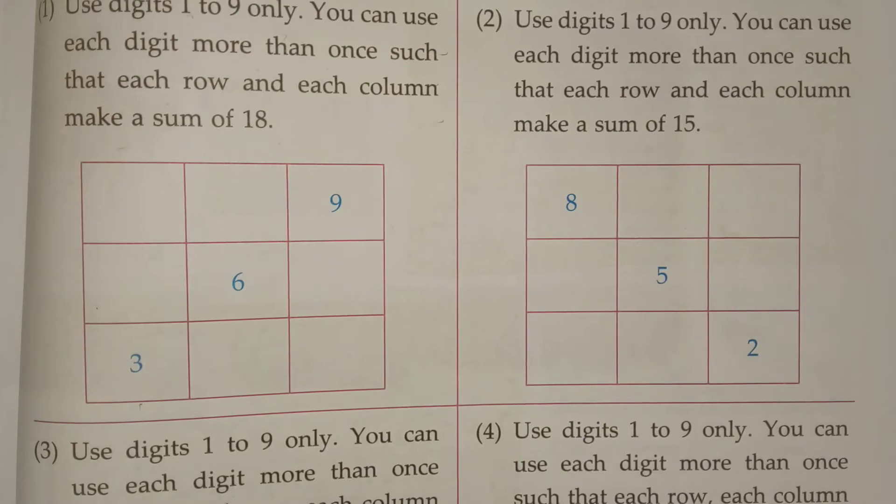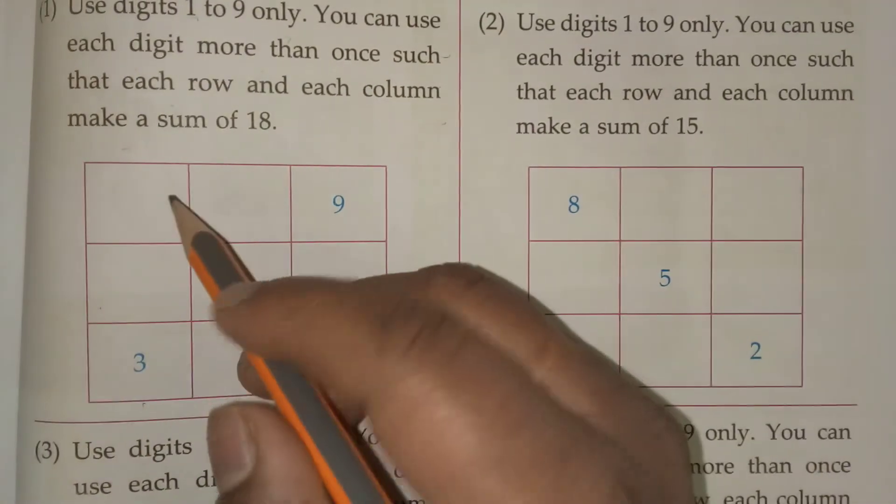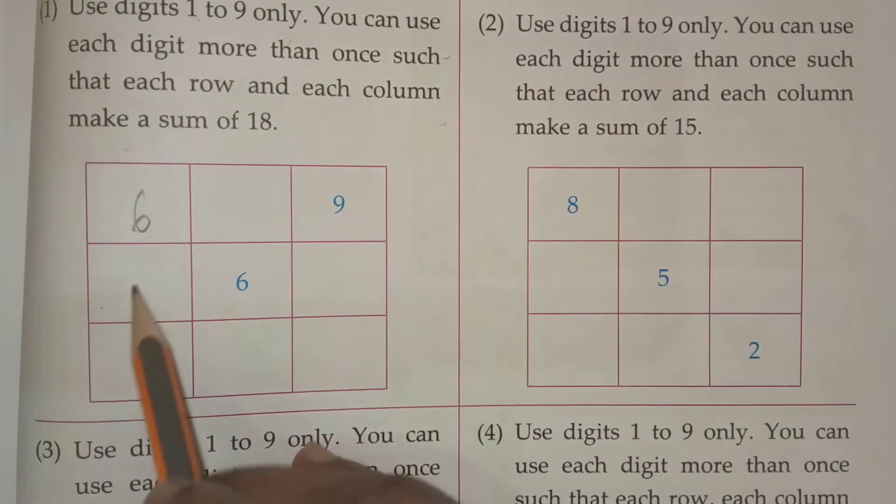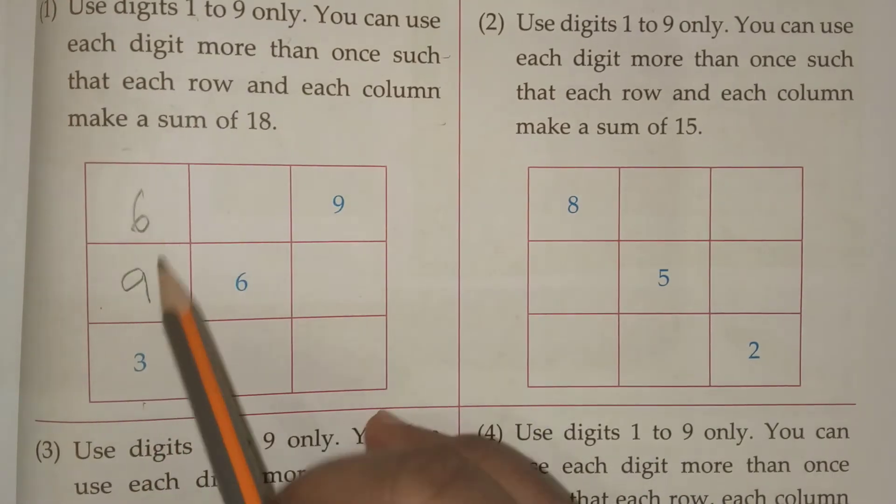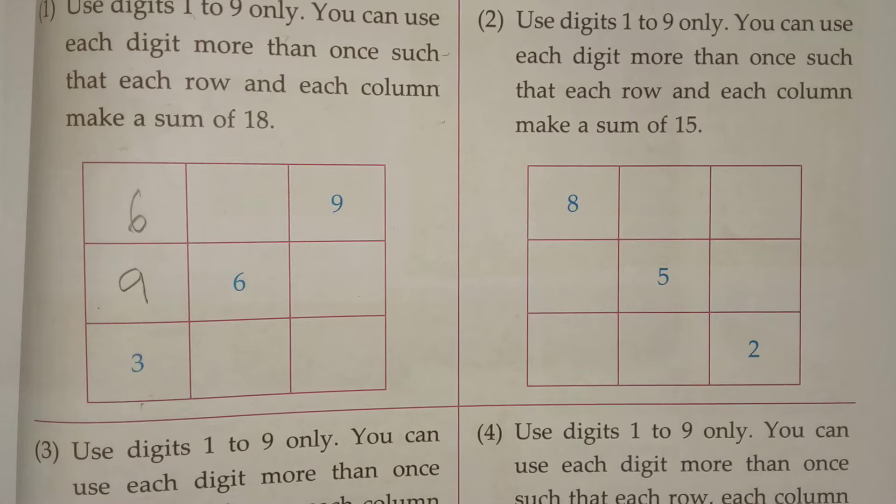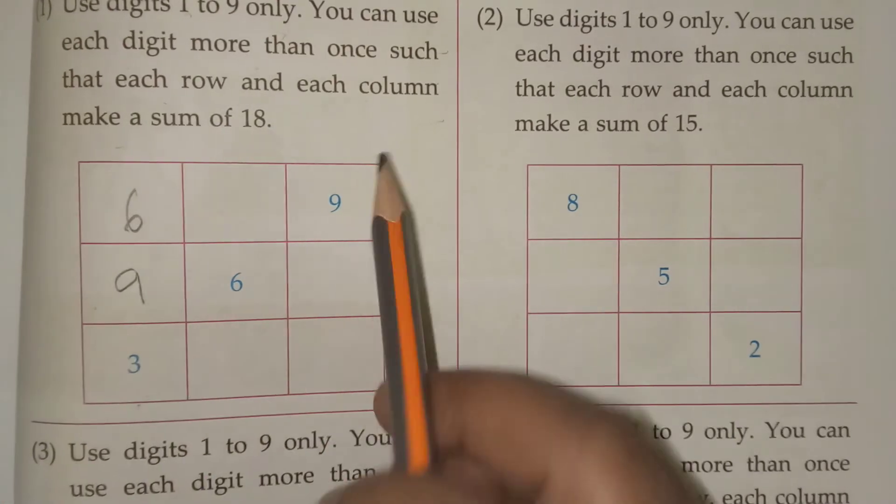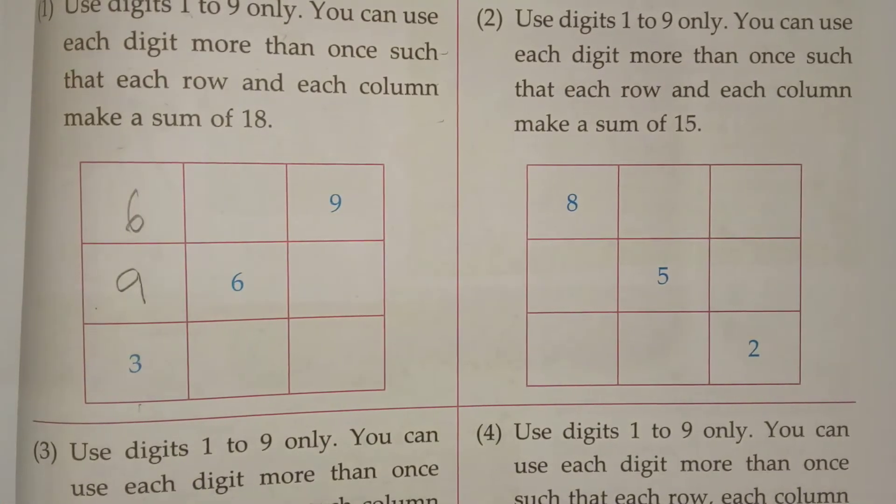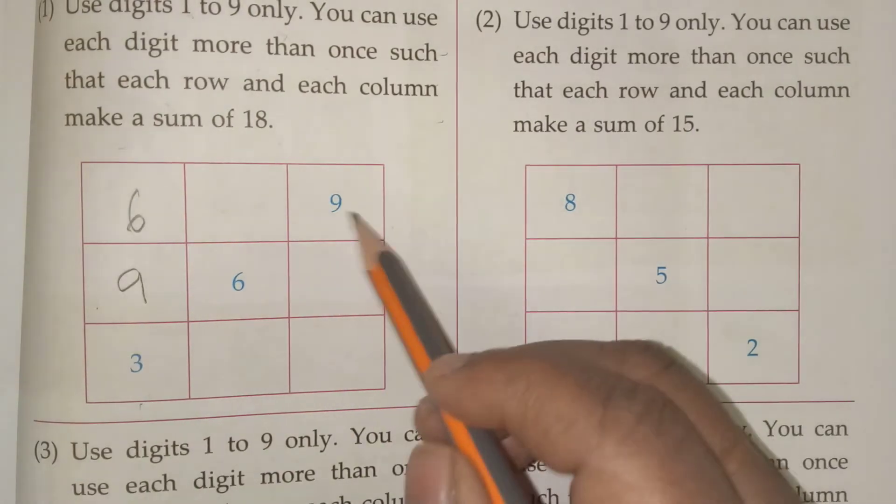See 6, 9, 3. It is again 18. Now see like this you should do. You should use these numbers itself and you can make. Next 6, 9, 3.